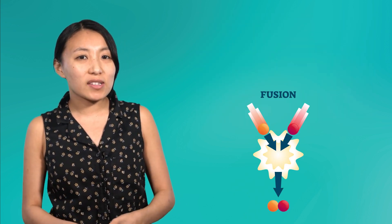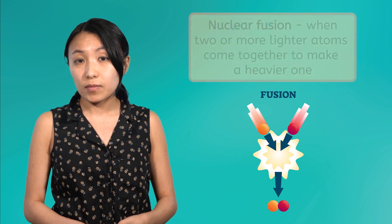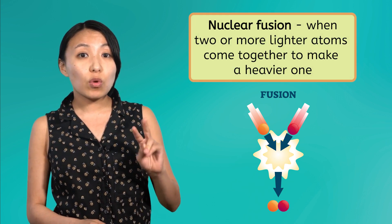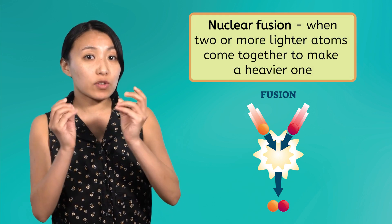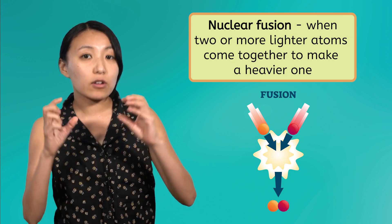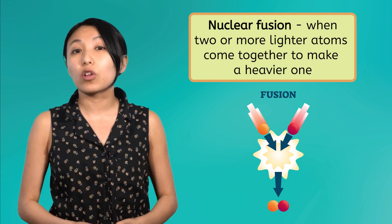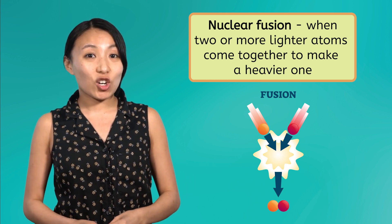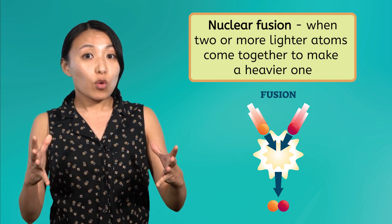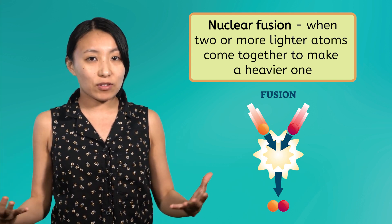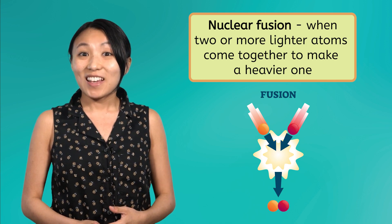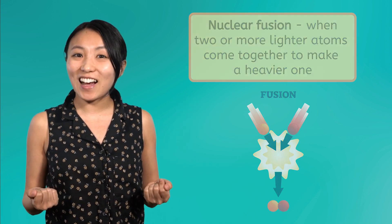Let's take a minute to recap the process of nuclear fusion. Fusion is when two or more small atoms, which are the smallest unit of matter, come together to make a larger one. When this occurs, energy is released, which lets out a massive amount of light and heat. This is why we can see stars in the night sky.